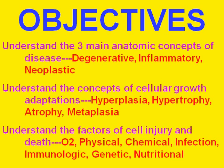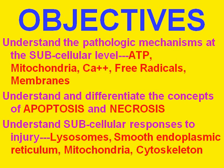We're going to talk about the different factors of cell injury and death — which ones are reversible, which ones are not reversible — and we're going to skip a lot of the crazy chemistry and go into the real conceptual meat of the thing. We're going to talk about the pathologic mechanisms at the subcellular level regarding mitochondria, calcium, free radicals, cell membranes, and ATP. We're going to talk about the difference between the concept of apoptosis and necrosis, and subcellular responses to injury with the various organelles.